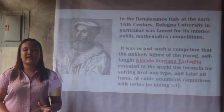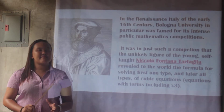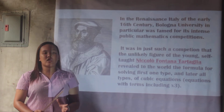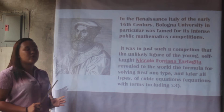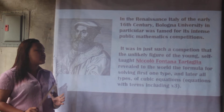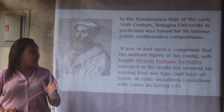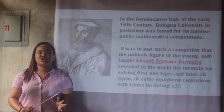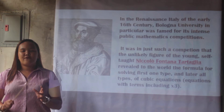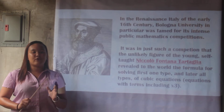In Renaissance Italy of the early 16th century, Bologna University in particular was famed for intense public mathematics competitions. It was in just such a competition that the unlikely figure of the young, self-taught Nicolo Fontana Tartaglia revealed to the world the formula for solving first one type, and later all types, of cubic equations.